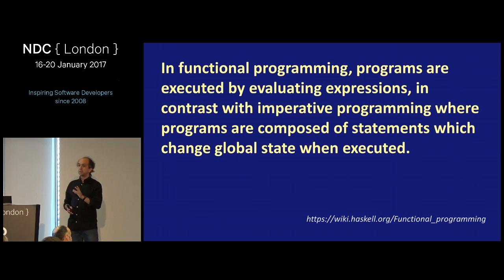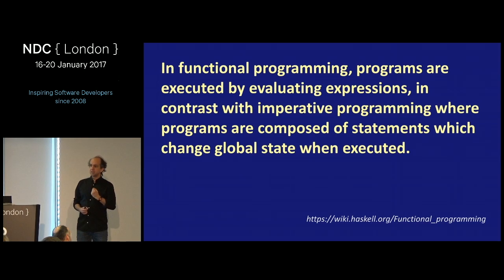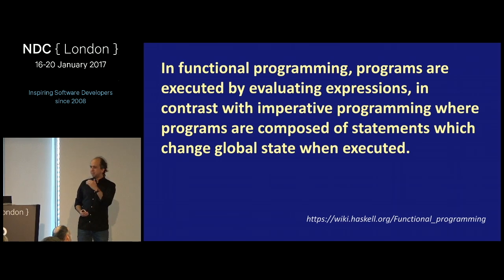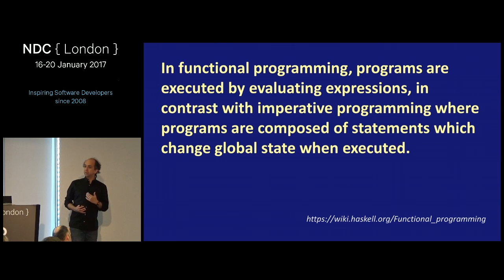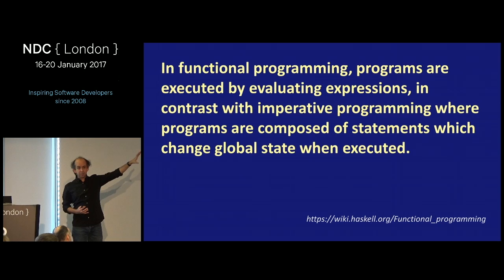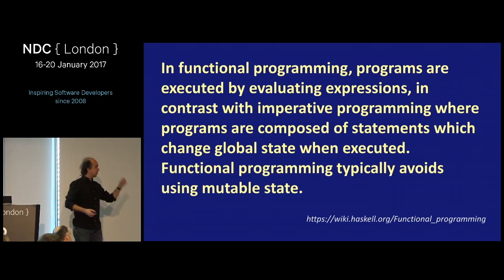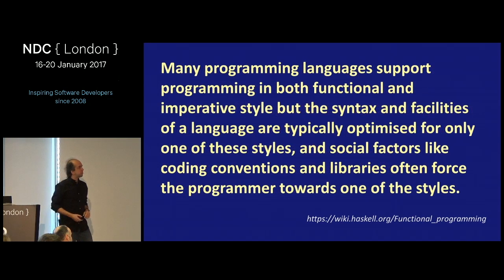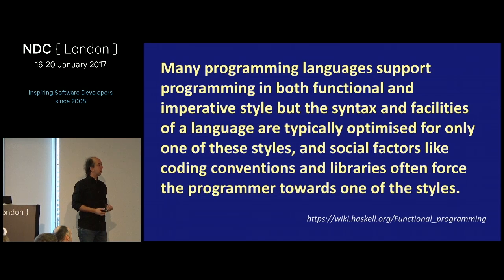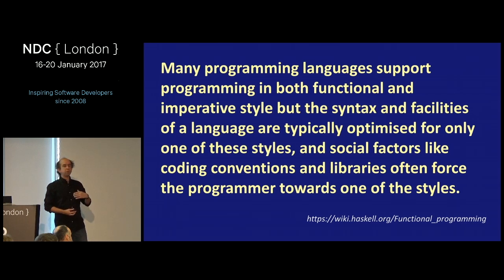One thing to understand here is a shift in terminology. Normally when we talk about global state, we mean globally accessible via scope — global variables, or public statics, which are basically global variables with scoping etiquette but are still global. What is being referred to in functional programming is the overall accessible state of the whole program. Functional programming typically avoids using mutable state. Many programming languages support both functional and imperative styles, but the syntax and facilities are typically optimized for only one of these styles.